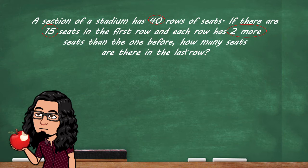If we analyze this we're gonna find three main things: the 40 rows of seats, the 15 seats in the first row, and that each row has two more seats than the one before. Now that we know that we're adding, we know that we're working with an arithmetic problem.